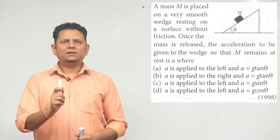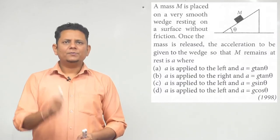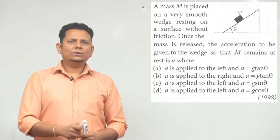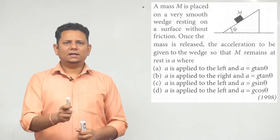Next question: A mass m is placed on a very smooth wedge resting on a surface without friction. Once the mass is released, the acceleration to be given to the wedge so that the mass m remains at rest.